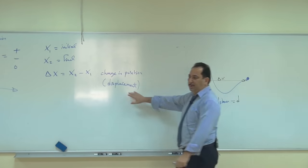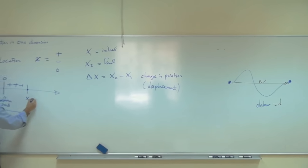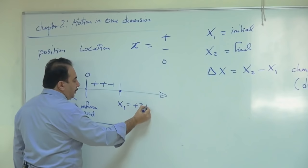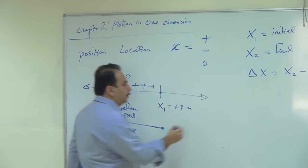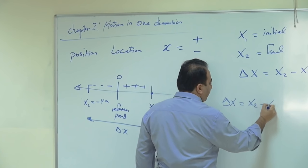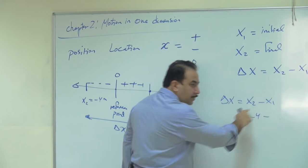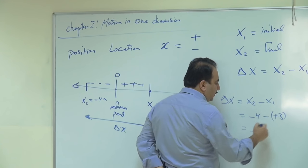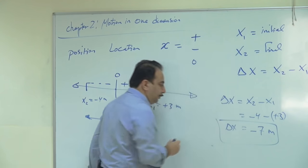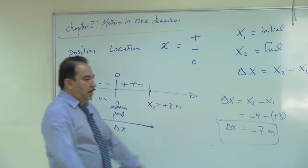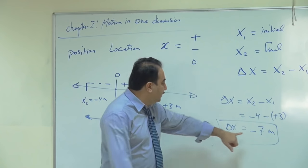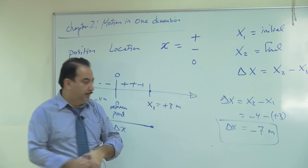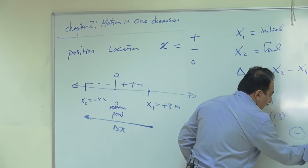Let's put values down: x1 = +3 m, x2 = -4 m. Delta x equals x_final minus x_initial = -4 minus (+3) = -7 meters. The seven is the value, and the minus means direction — pointing to the left. So you started at +3 and finished at -4, moving to the left.